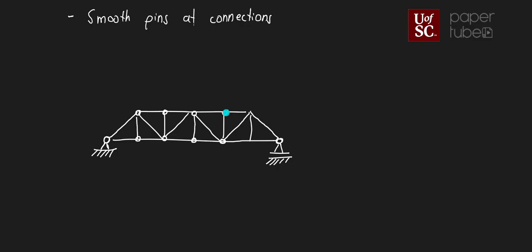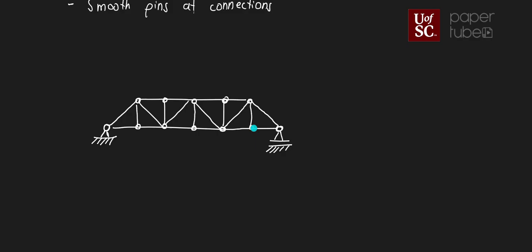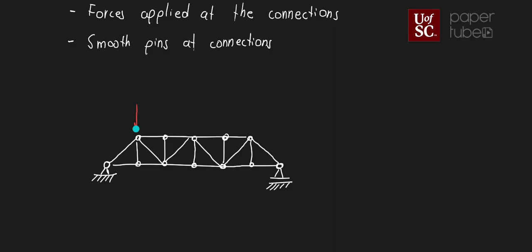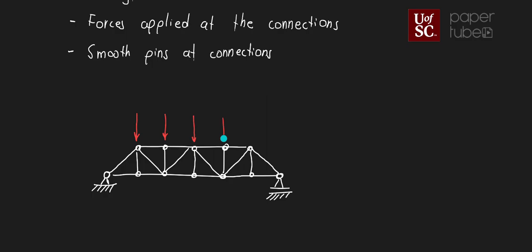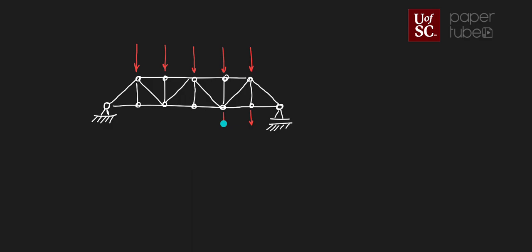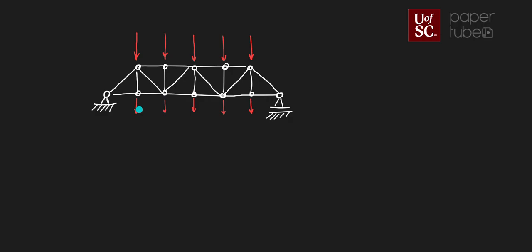The assumption here is that the connections between all the structural elements are smooth pins, so we're not including any moments in the structural elements. The other assumption is that all the forces are acting on the pins. The structure shown is made of triangles — one triangle, another triangle — and the connections between structural elements are smooth pins with all forces applied at the connections.